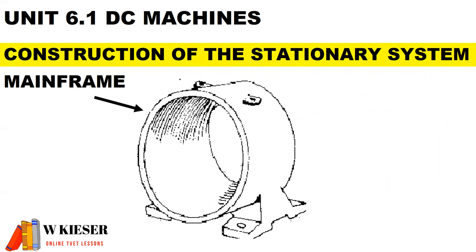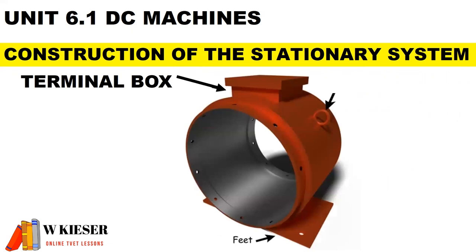The construction of the stationary system consists of the mainframe, also known as the yoke, which forms the outer casing and protects the inner parts. The terminal box is on top of the yoke and that is where the electrical connections are made.